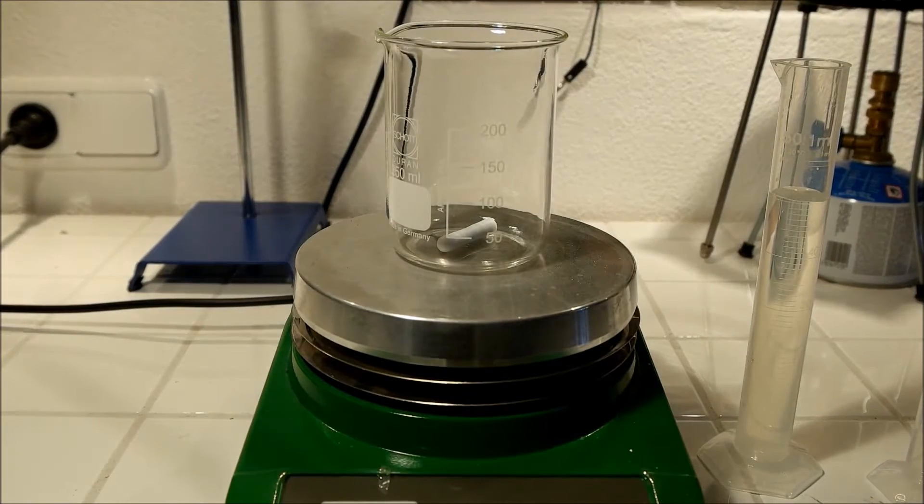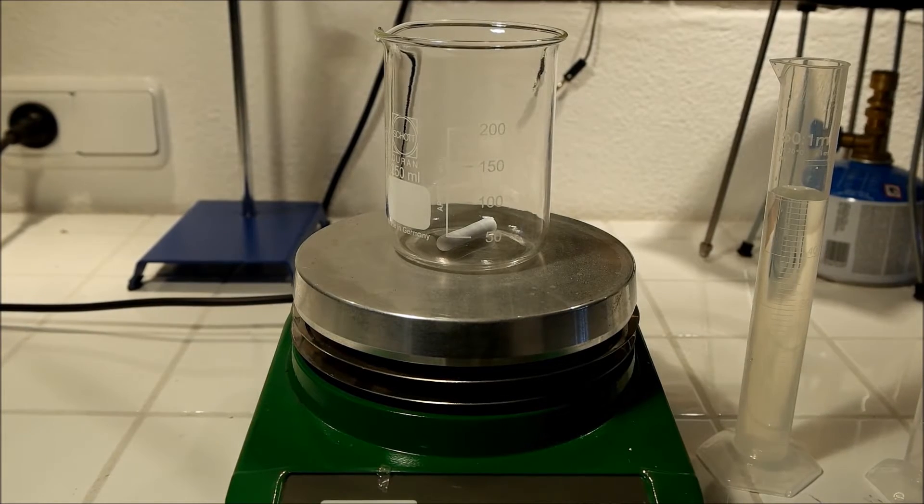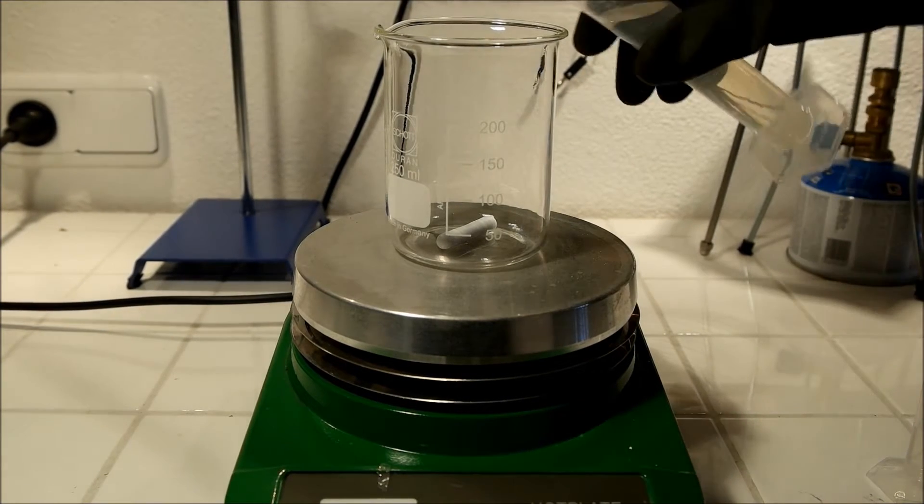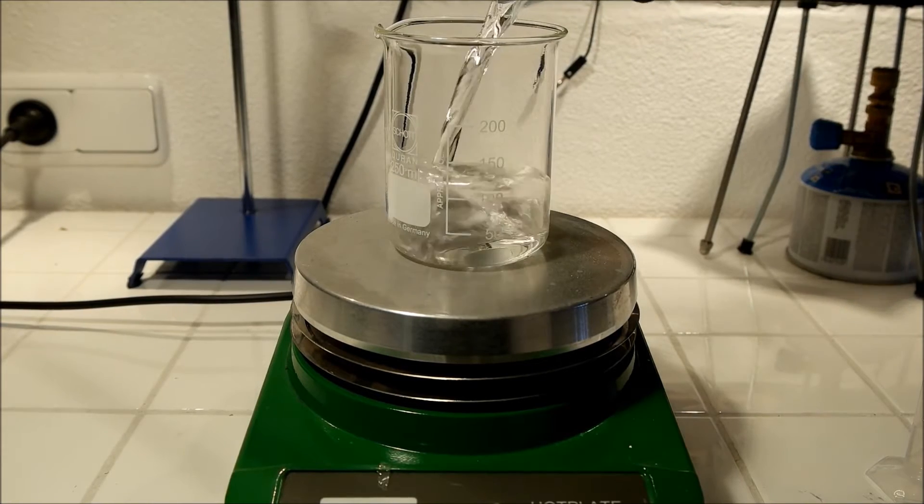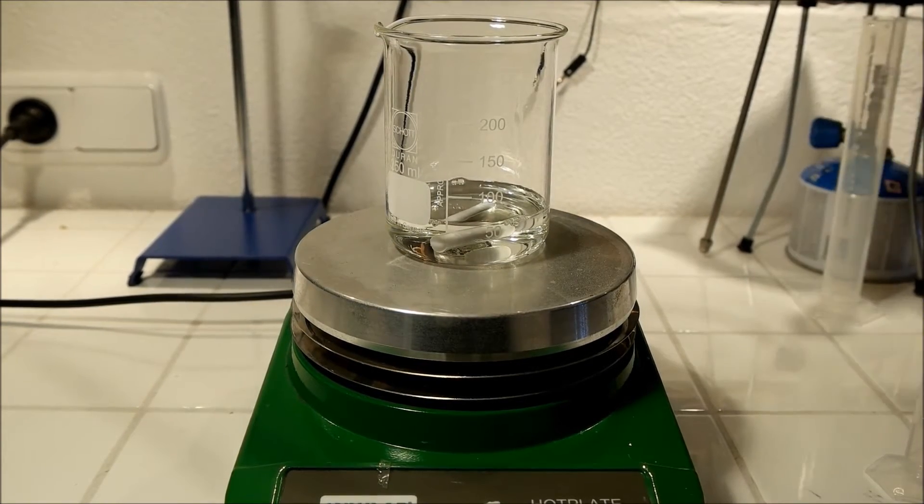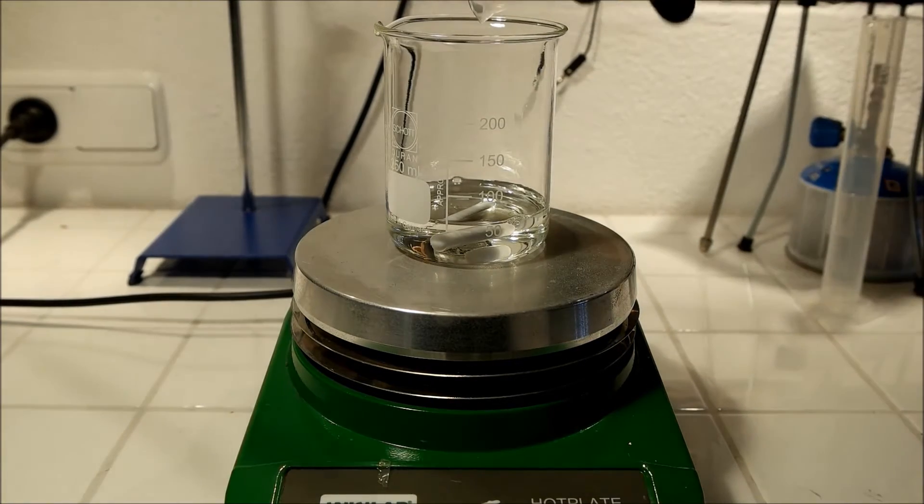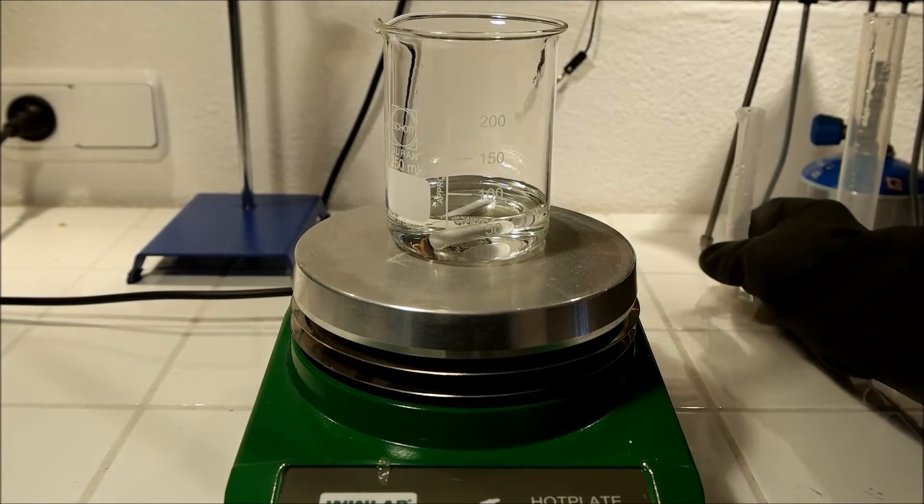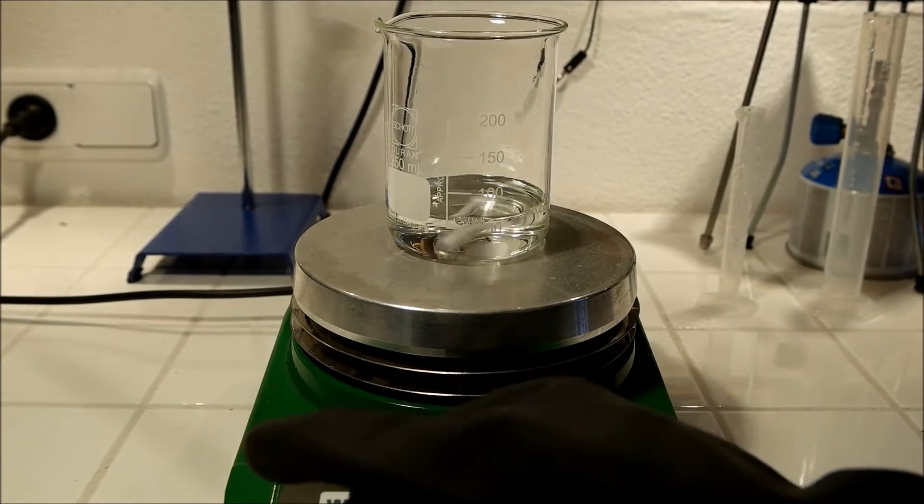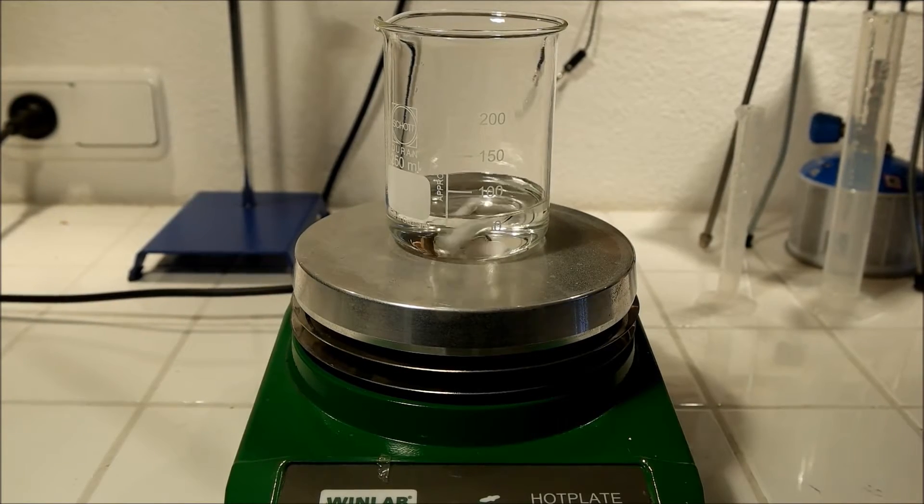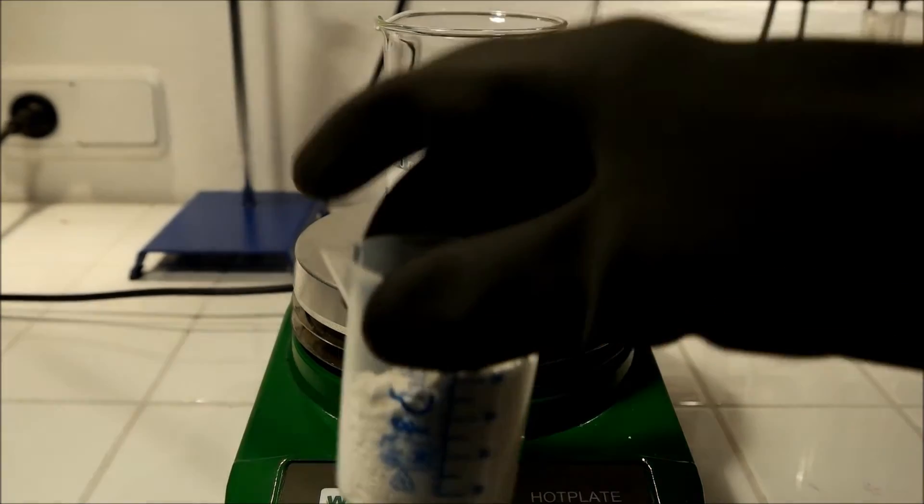I decided to perform the reaction on a magnetic stirrer. In this beaker I will first put in the hydrochloric acid. 50 milliliters and 2.4 milliliters. Turn it on. And then slowly add my barium carbonate here.